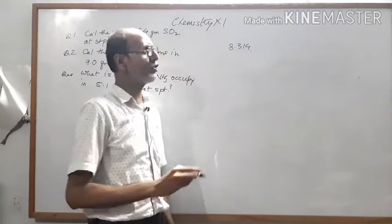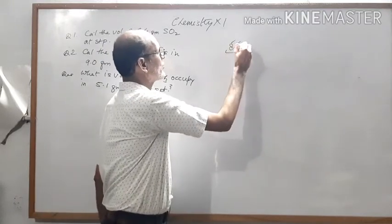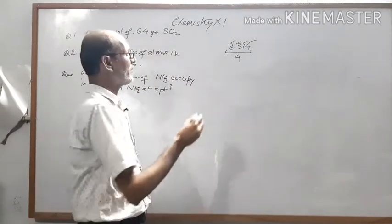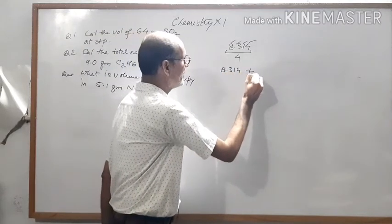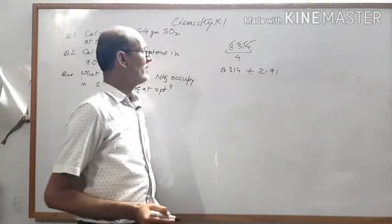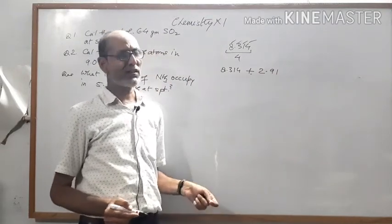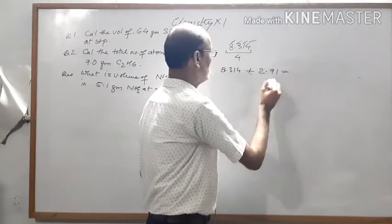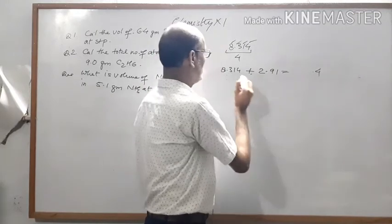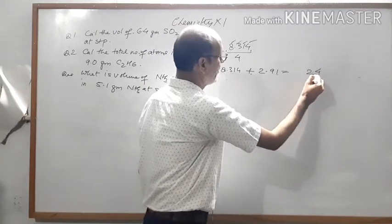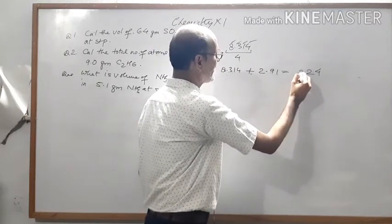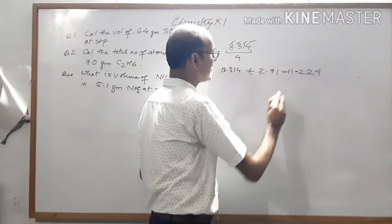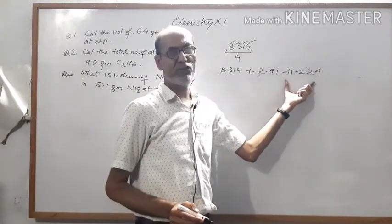There are 4 significant figures in 8.314. When we calculate something like 8.314 plus 2.91 and need to find the answer in correct significant figures, first we add them to get 11.224. But how do we express this according to significant figures?